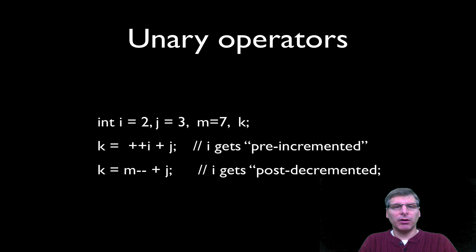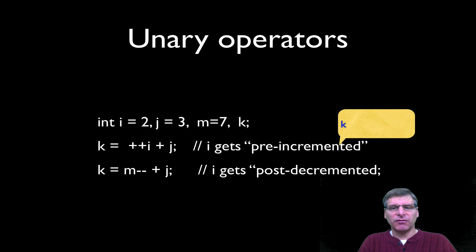We also have a number of unary operators in the C language. In this example, I'm showing you the increment and decrement unary operator. So in this example, I have i equals 2, j equals 3, and m equals 7. And I've defined the variable k but left it uninitialized. In the first statement, k equals plus plus i plus j. The plus plus i is what we call a pre-increment here. Because the plus plus operator appears before the variable i, i is going to get pre-incremented. It's going to get incremented before it's used in the broader expression in which it appears here. So in this case, the i is 2, so it's going to get 3, which we're going to add to j, giving us a final value of 6 in the variable k.